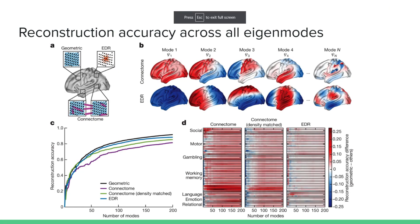Here we have the reconstruction accuracy of different eigenmodes on brain activity associated with a few tasks. Overall, geometric eigenmodes outperform connectome eigenmodes and eigenmodes derived from the exponential distance rule connectivity, indicating that geometric eigenmodes are a more natural way to decompose and understand brain dynamics in the neocortex.